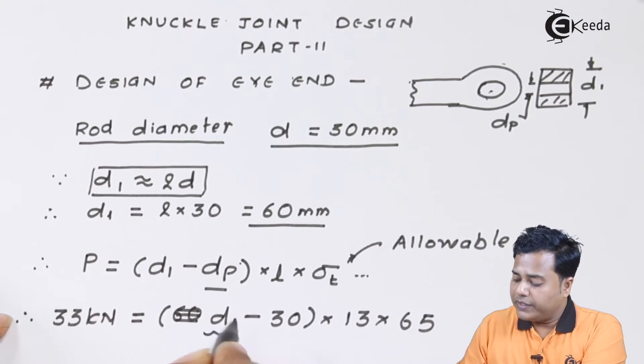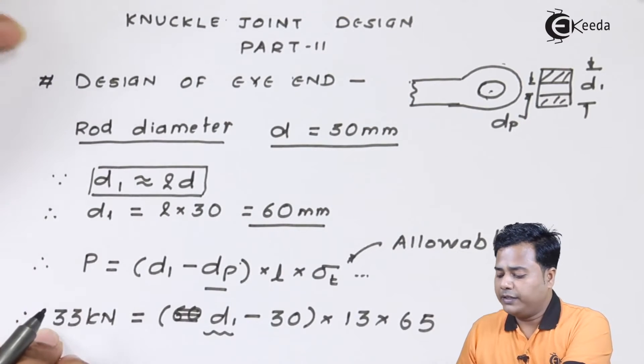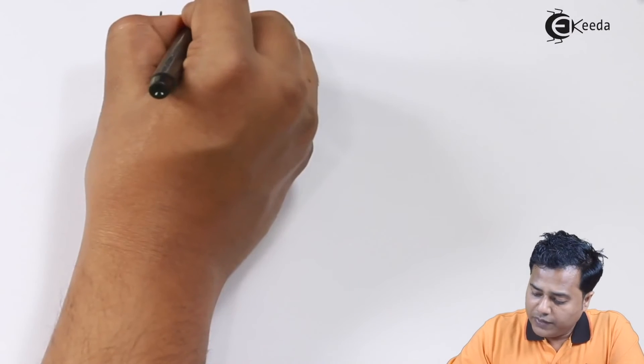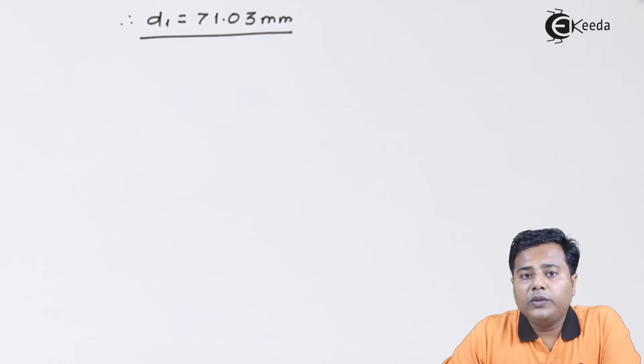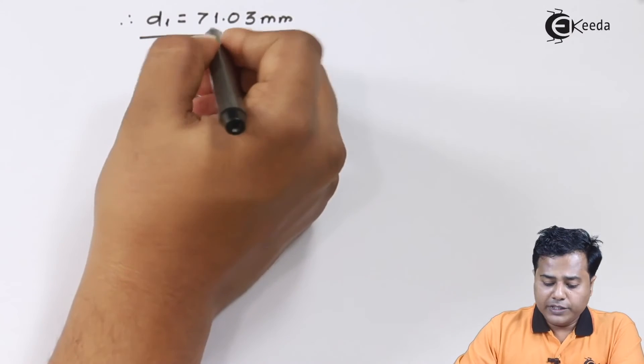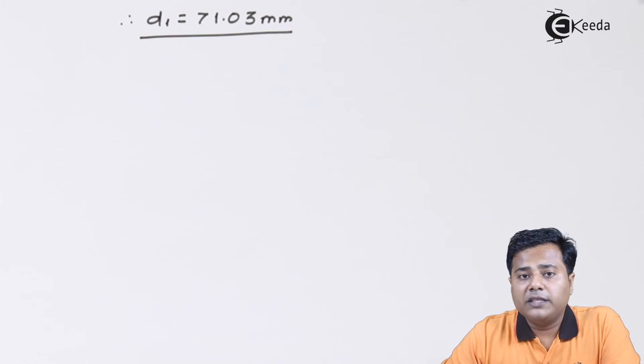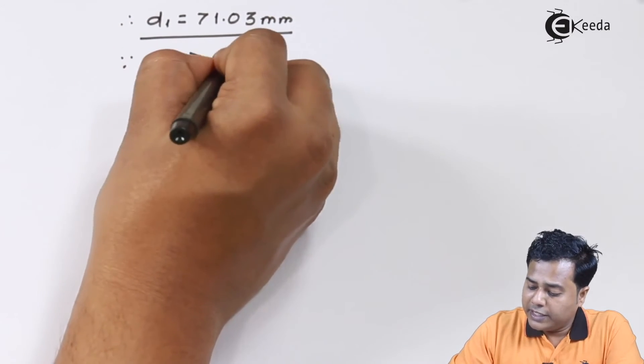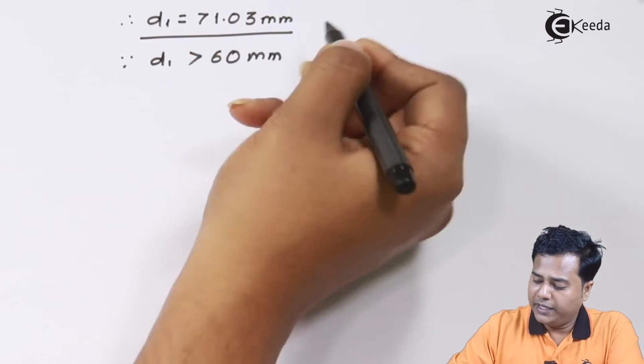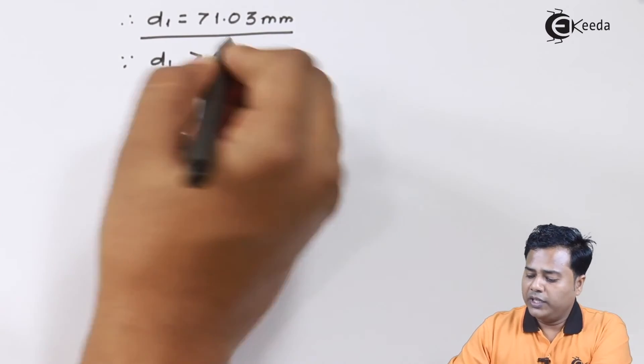The value I'll get is somewhere equal to 71.03 millimeter. Now we know that we have considered the value using the standard relation and that is 60 mm. However, the value which is obtained is greater than that. That means calculation-wise the value should be larger than the standard relation value.